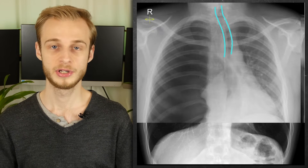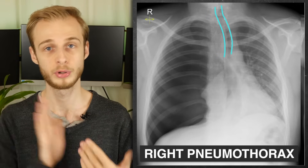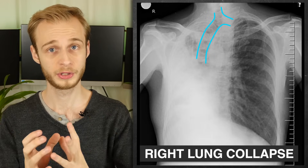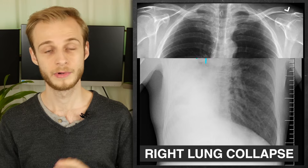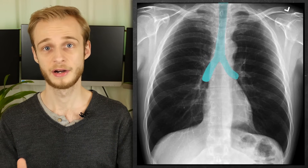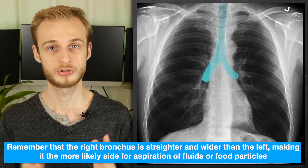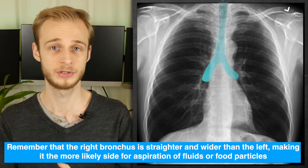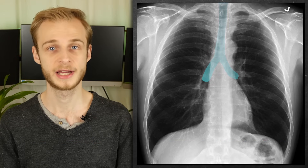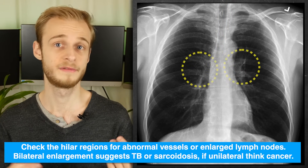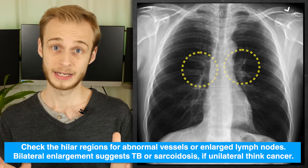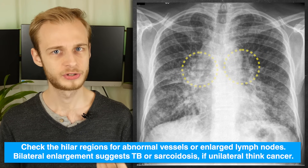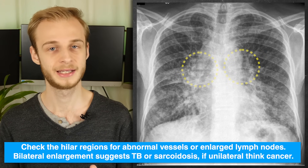A significant pneumothorax or pleural effusion will exert a mass effect and push the trachea away from itself, but in the event of a collapsed lobe or part of the lung, the loss in volume will pull the trachea towards that side. We then need to check the carina and the bronchi, the largest of our airways. Remember that the right bronchus is more straight and wide than the left, making it more likely for things to cause an aspiration pneumonia. Bilateral lymphadenopathy in the hilar regions might suggest TB or sarcoidosis, while unilateral swelling is more likely to signify cancer.